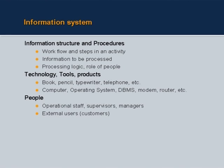Traditionally, information technology used to be books, pencils, typewriters, and telephones. None of us look at these as information technology elements. The reason is that particular technology has become so ubiquitous in our lives — right from childhood we adopt it. The digital technology like computers, operating systems, databases, modems, and routers are relatively a new phenomenon in our humanity and have not yet been fully absorbed.